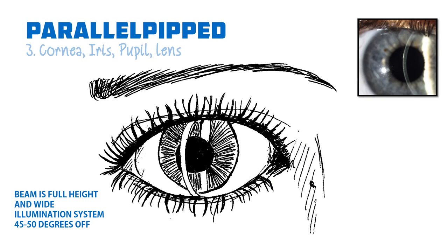Next, the parallelepiped is used to examine the cornea, iris, pupil and lens. This is a beam that's full height and wide. The illumination system this time is 45 to 50 degrees off. Start with the cornea and scan across it. Here you're looking for a clear cornea, and it's only when you find an issue with the cornea that you would zoom in.